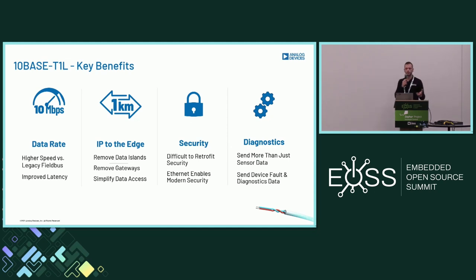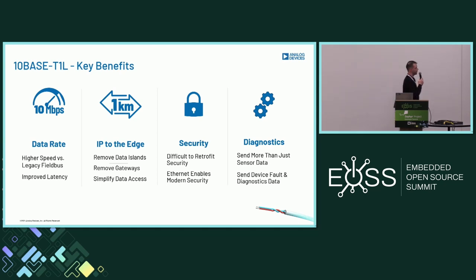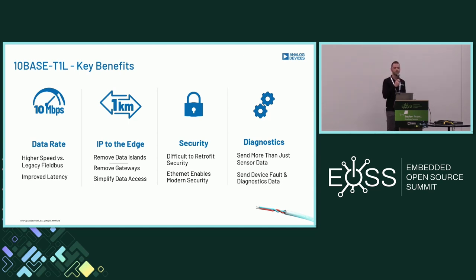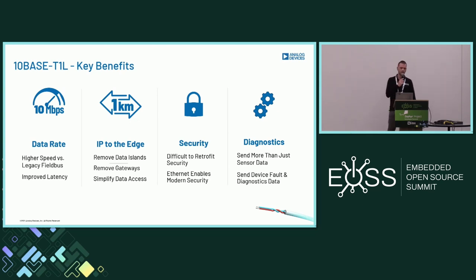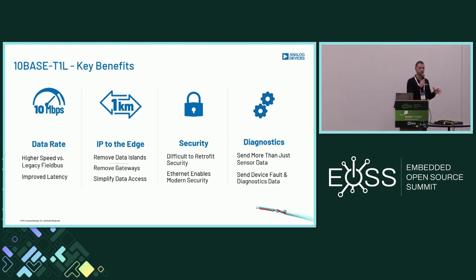Looking at TenBase T1L's key benefits in four areas: data rate, bringing IP to the edge, security, and diagnostics. On data rate — 10 megabits per second may not sound impressive given gigabit ethernet today, but the key comparison is to legacy fieldbus protocols like RS-485. Over distances of one kilometer, RS-485 operates in the kilobit per second range, so 10 megabits per second is a sizable improvement and is often plenty for sensor and edge device applications. The improved latency is also important for applications like control loops requiring millisecond latency.